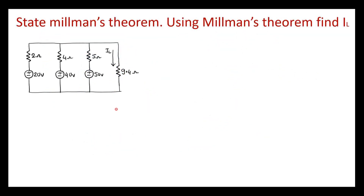Now consider the second example: State Millman's theorem and using Millman's theorem find IL. For the statement of Millman's theorem, please watch my other video. This is the given circuit. Current IL is flowing through the 9.4 ohm resistor. In Millman's theorem, the branch in which the current is flowing must be removed from the circuit. Let me consider this as terminal AB. So the first step is to remove the 9.4 ohm resistor connected at terminals A and B.